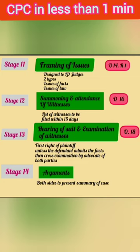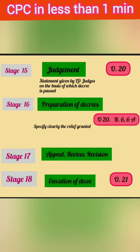Stage 12: Summoning and Attendance of Witnesses — Order 16. Stage 13: Hearing of a Suit and Examination of Witnesses — Order 18. Stage 14: Arguments. Stage 15: Judgment — Order 20. Stage 16: Preparation of Decrees — Order 20, Rule 6, 6A. Stage 17: Appeal, Review and Revision. Stage 18: Execution of a Decree — Order 21.